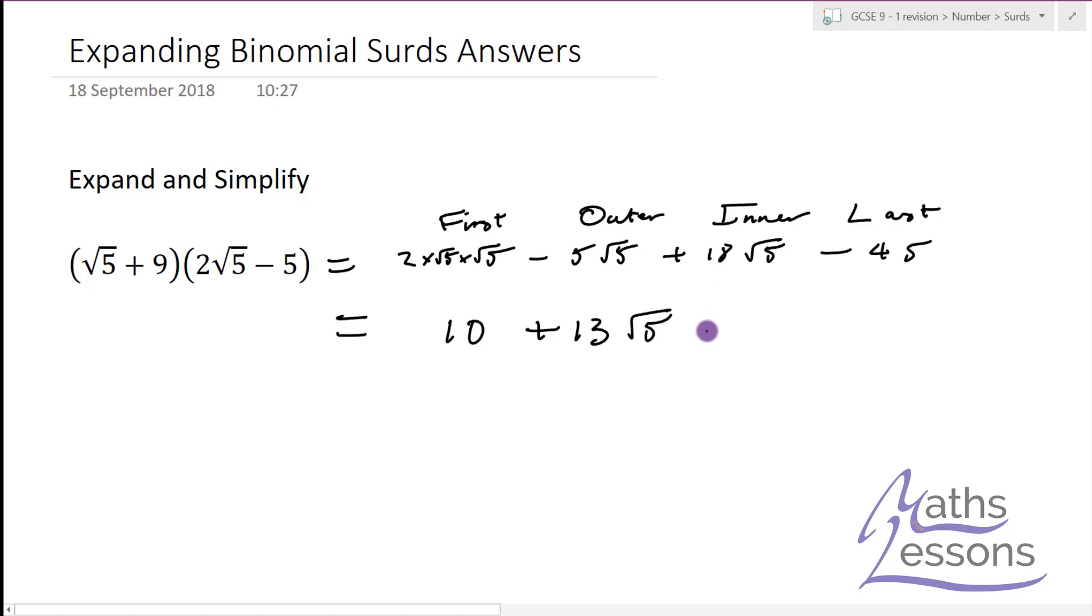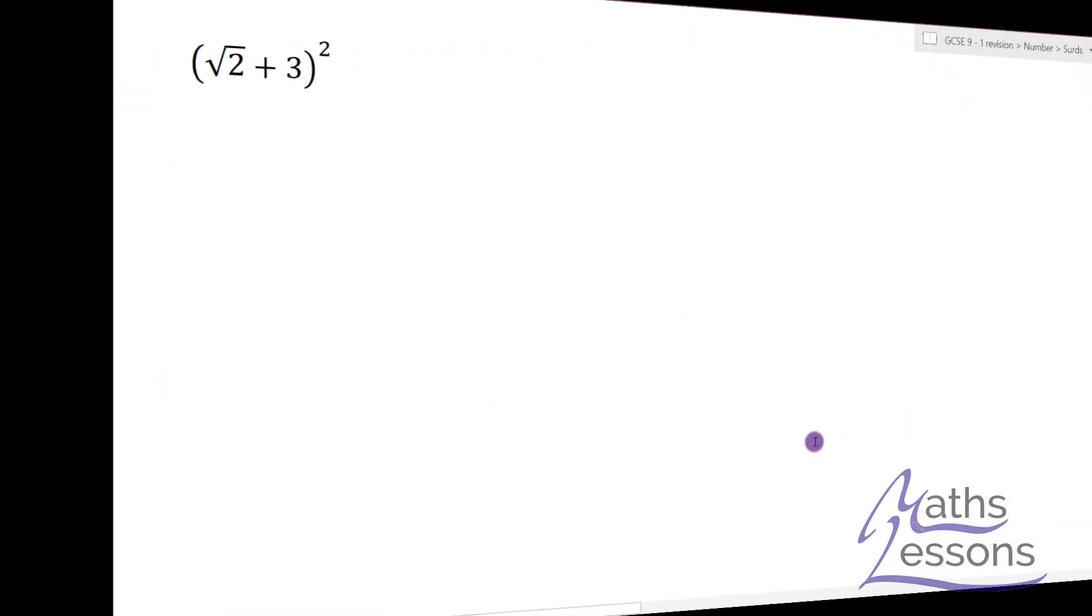We still got minus 45 on the end. 10 minus 45 is going to be minus 35. I'm going to put the positive thing at the beginning because that makes it look a little bit neater mathematically. So we've got 13√5 minus 35.